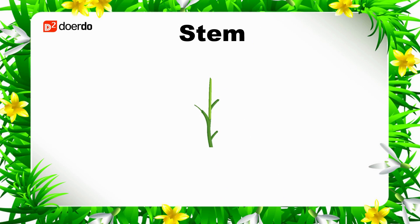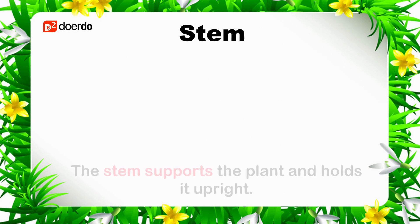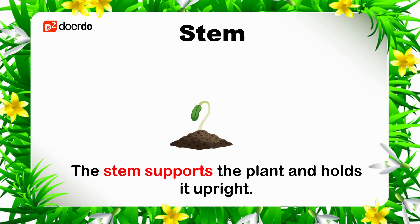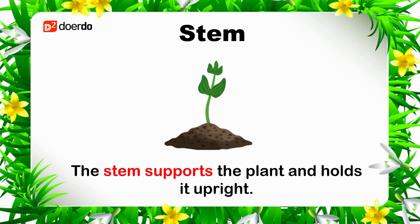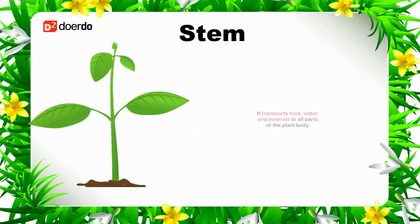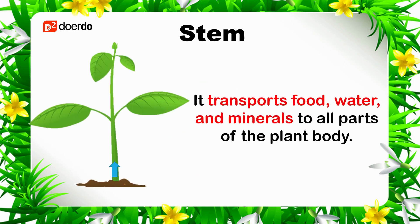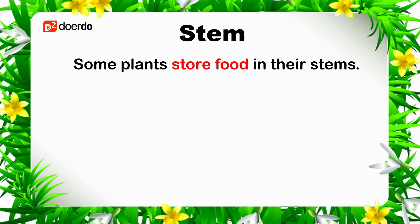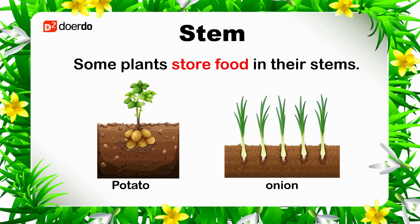Now let's see the function of the stem. The stem supports the plant and holds it upright. It transports food, water, and minerals to all parts of the plant body. Some plants store food in their stems. Examples of plants that store food in their stem are potatoes and onions.